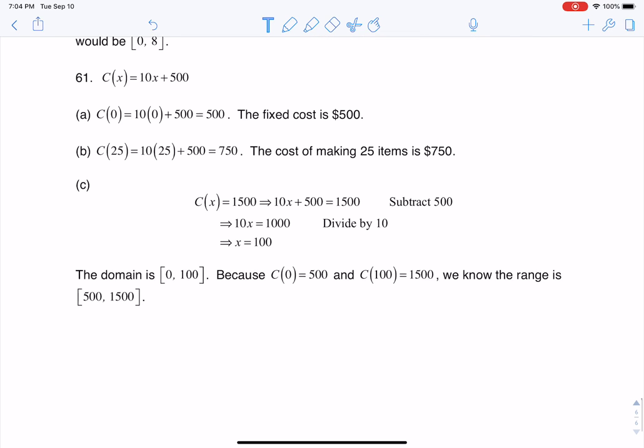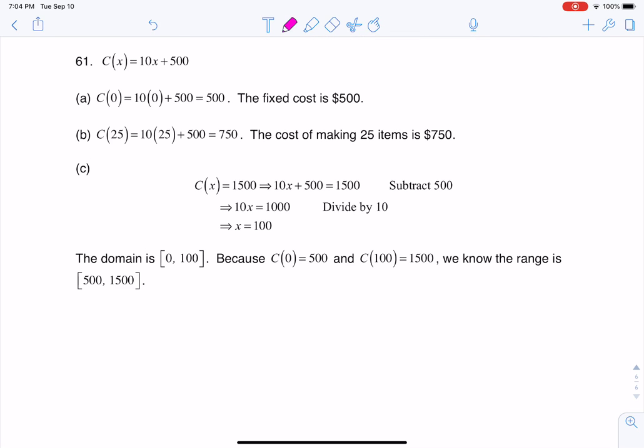So let's just get a couple of things under our belt. Let me scooch this up a bit. So C, that's our dependent variable, like our y variable, but this is cost in dollars, and x is our independent variable, and this is just the number of items that we've made. So number of items made.